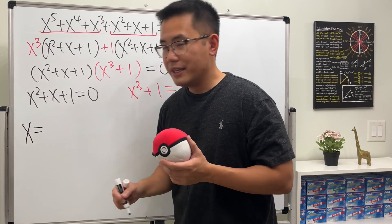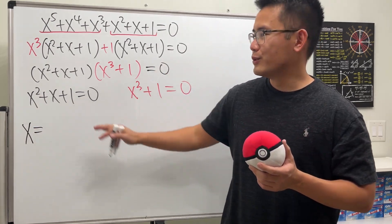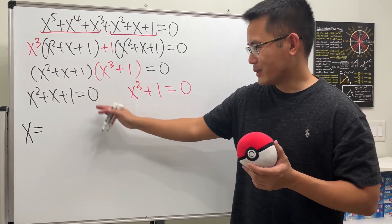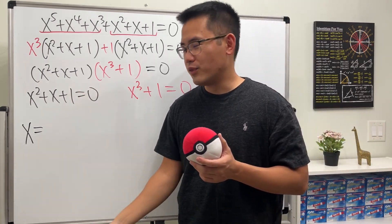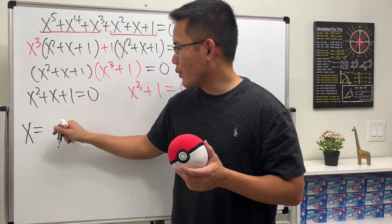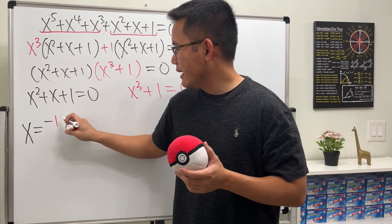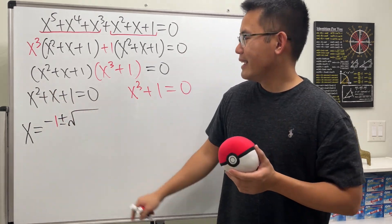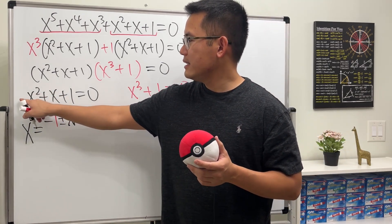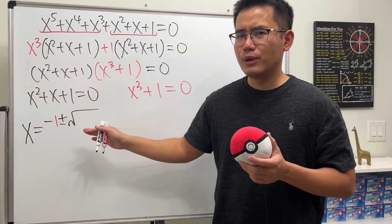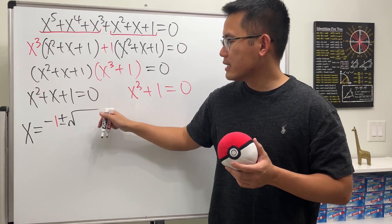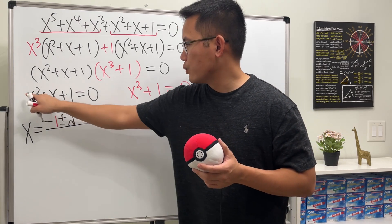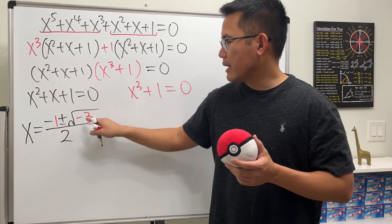In a previous video I already showed how to do this by completing the square, so let's use the quadratic formula here. Negative b is negative one, plus or minus the square root of b squared minus four ac. Since a equals one, b equals one, and c equals one, we get one minus four, which is negative three inside the square root.